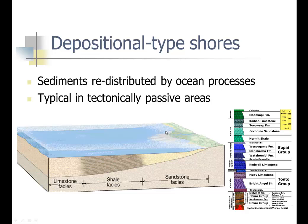If sea level were to rise, the sandstone would move farther inland, shale would move on top of it, and limestone would move on top of the shale. Or if the land rises or sea level falls, we'd find the sandstone move over on top of the shale, shale on top of the limestone, and eventually the sandstone on top of the shale on top of the limestone.